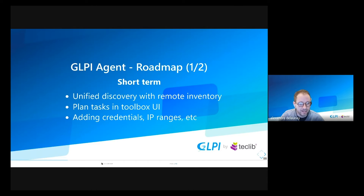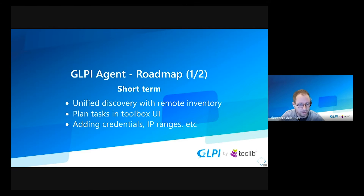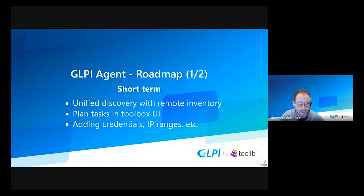Two last bullet points describe things required by the unified discovery. The new toolbox UI will receive forms to plan tasks for the agent and to save credentials like SNMP community login password for Windows domain or public key for SSH connection. In summary, any information to let the agent connect to a remote device.